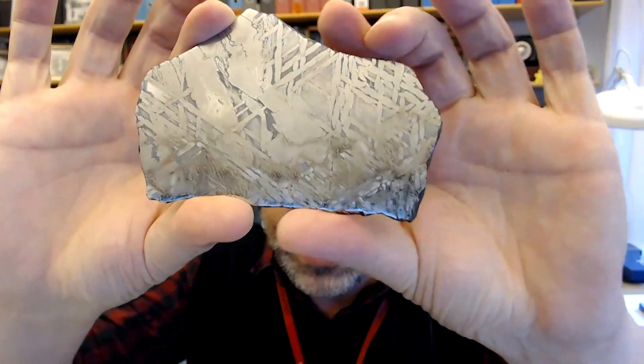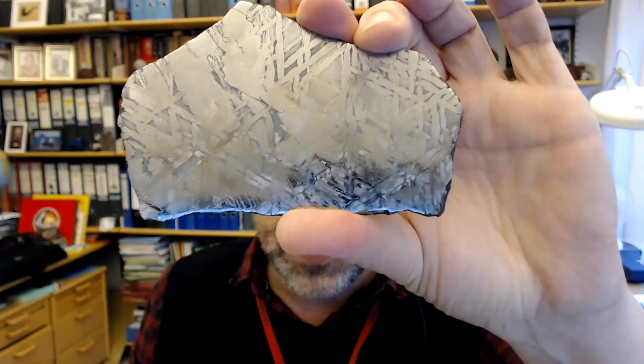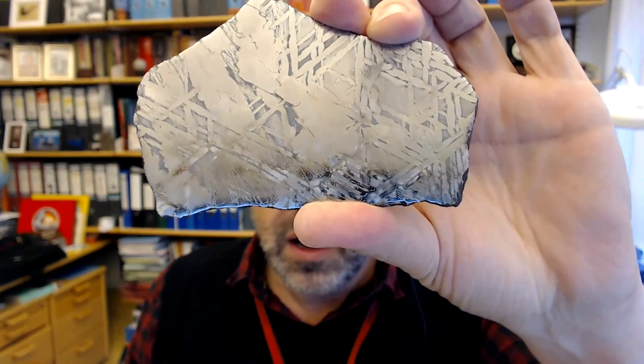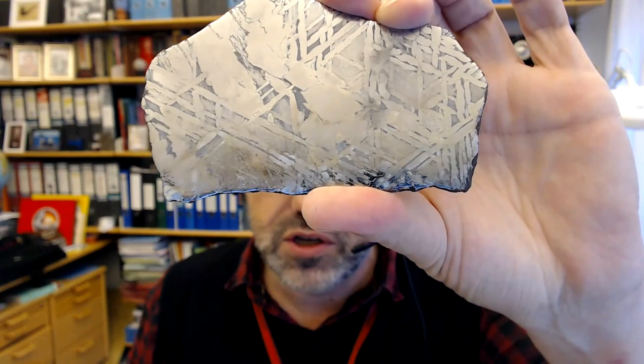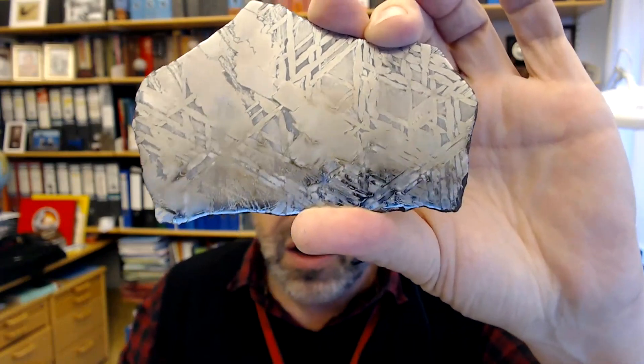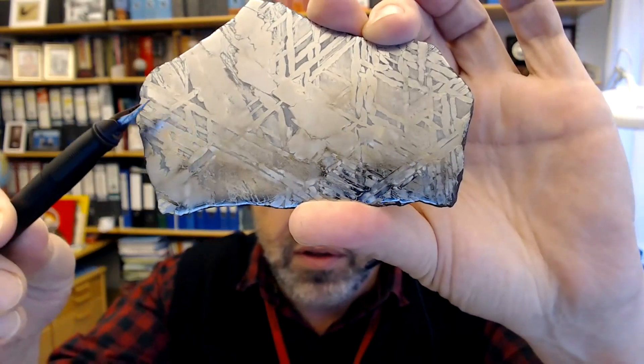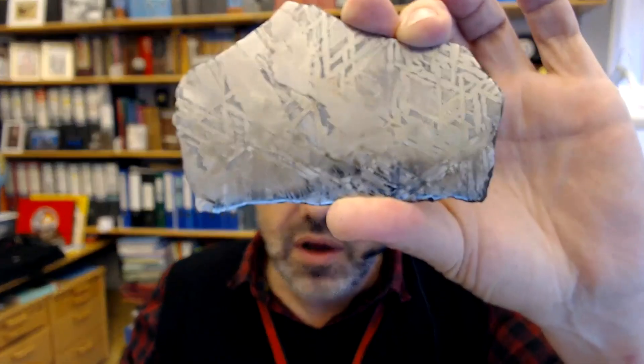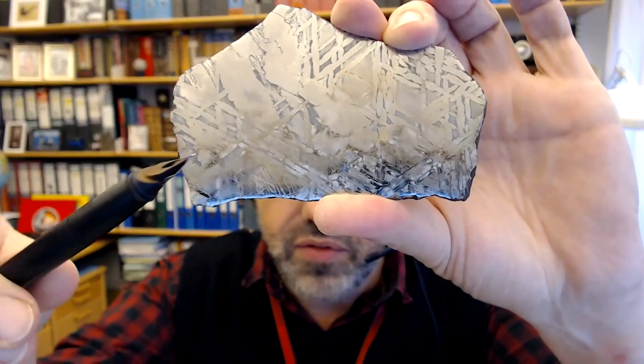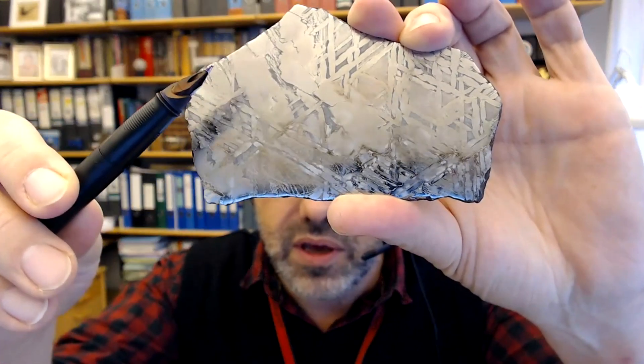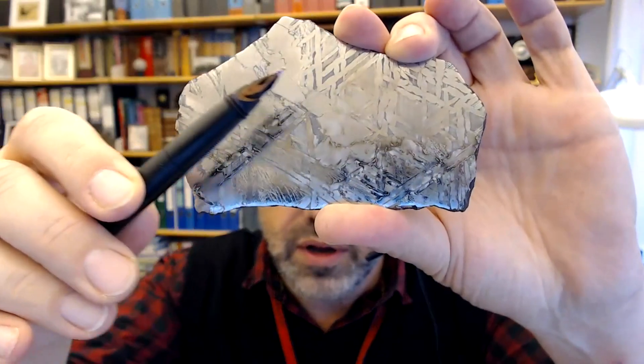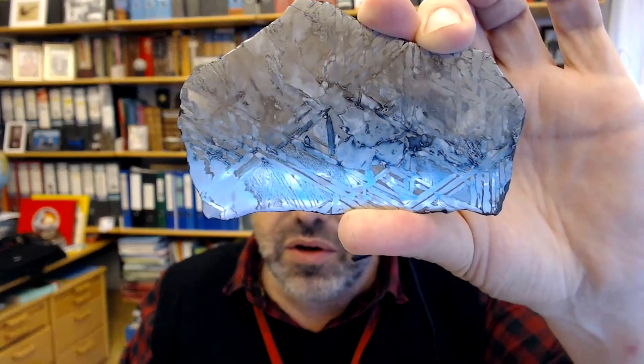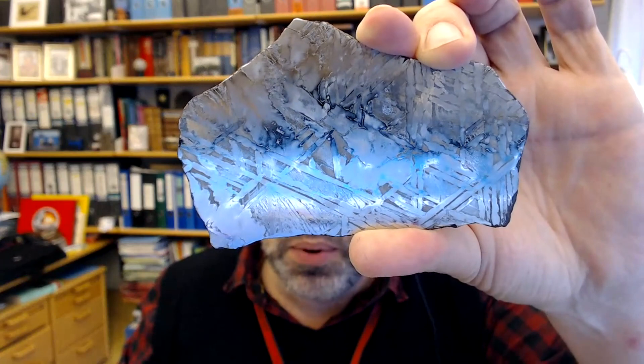It's got these lamellae. This is kamacite and taenite, the crystals that form when the metal alloy in the core of such a small planet is solidifying. Here we have these lamellae, iron-nickel alloys. But what we also have, and this is really intriguing, are these rather bulbous and blobby areas here. And here's another one, and another one. They don't have lamellae. You can see them here. They're more drop-like or blob-like. They could have been fluid.